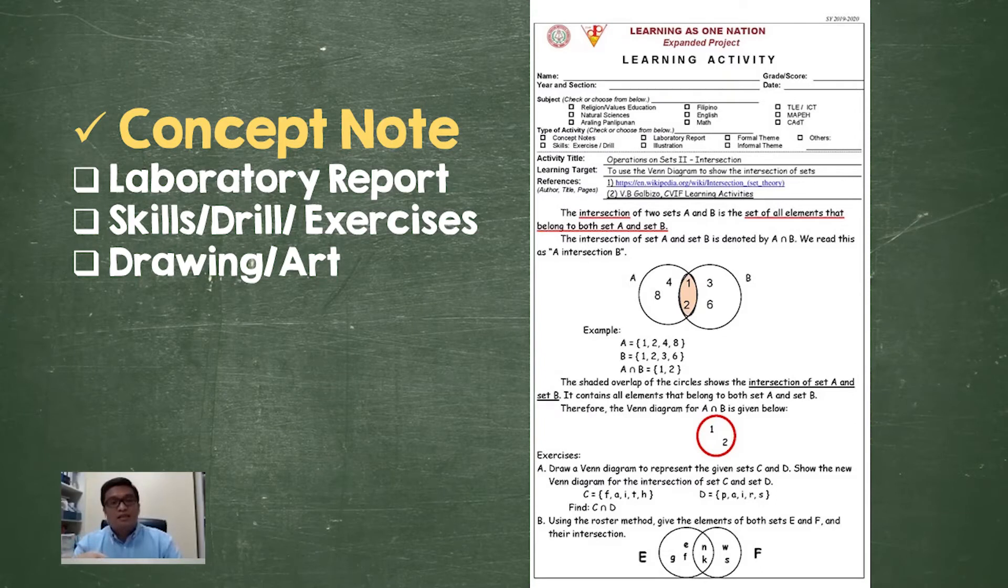In order for the student to understand this, an illustration was provided as well as some examples. After the digest and the example, what follows is the exercise. In the exercise, the student will try to copy this and answer this based on how he understands the learning activity sheet.